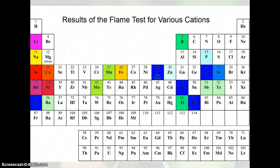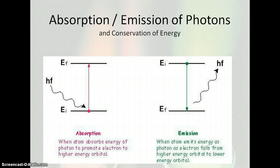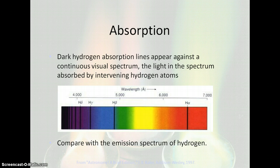Here are some of the colors we would get for some of the metals and various cations on the periodic table — these are some flame test colors. When we absorb, we're going to be missing certain parts of the visible spectrum; that's our absorption spectra. Then the same amount of energy is released or emitted, and we'll have a certain wavelength of energy showing up on a black background — that's our emission spectra.